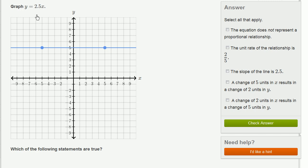We're asked to graph y equals 2.5 times x. So we really just have to think about two points that satisfy this equation. And the most obvious one is what happens when x equals 0. When x equals 0, 2.5 times 0 is going to be 0. So when x is 0, y is going to be equal to 0.